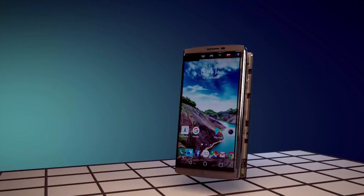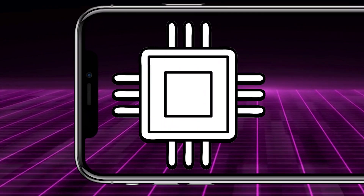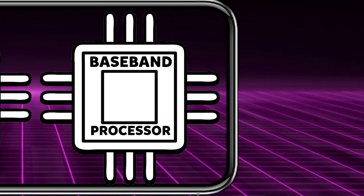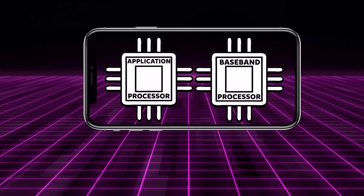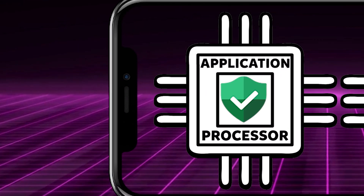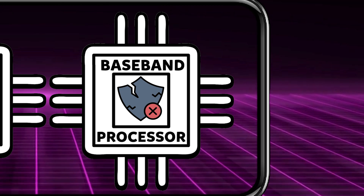When I started learning about mobile security, I learned that mobile devices consist of two main modules: the application processor and the baseband processor. I didn't know that these two were actually separated from each other. Although the application processor side is very secure, the same is not true for the baseband side.